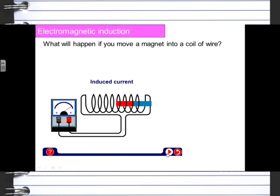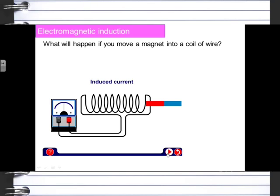When we press play, the magnet is moved in and you can see the current changes. Then as it's moved out, it goes in the opposite direction because of the change in movement. So pressing play going in and then coming out, it changes that direction.